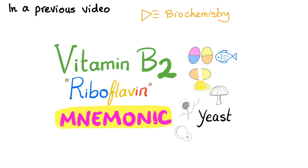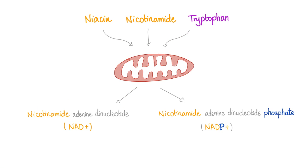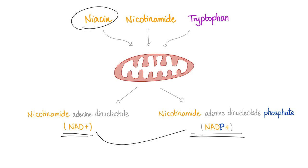In a previous video, we had a mnemonic about vitamin B2, the riboflavin, and since it's the riboflavin, it was the F mnemonic. Please don't forget that vitamin B3 will give you NAD and NADP. How do you add a phosphate group? You need a flipping kinase.